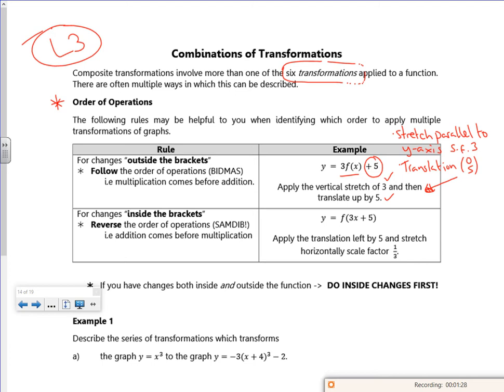Now the ones inside the bracket, you kind of go backwards on it. So you think you'd do the three before the five, but you have to do the five first before the three. So you go backwards. So reverse the order. So once again, I don't like this. A translation left by five.